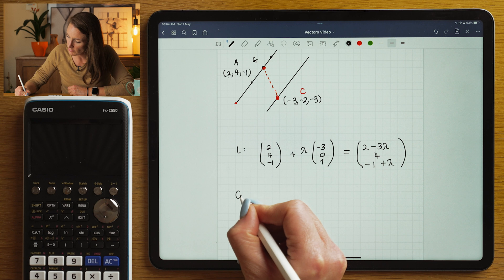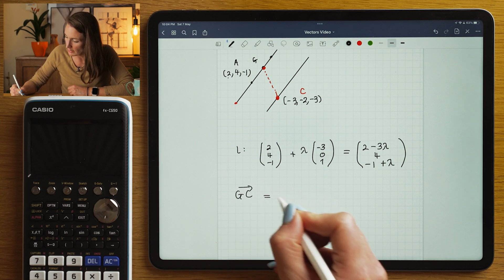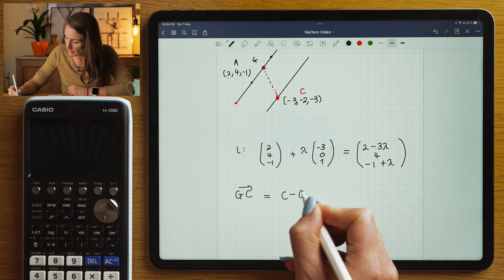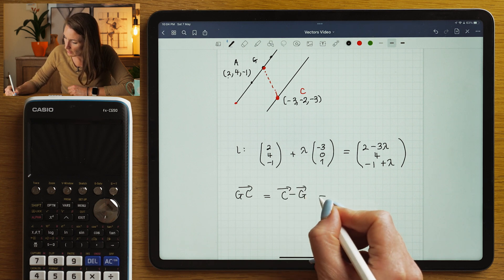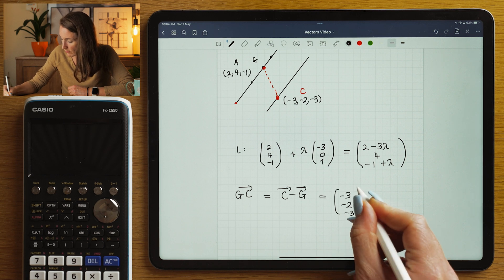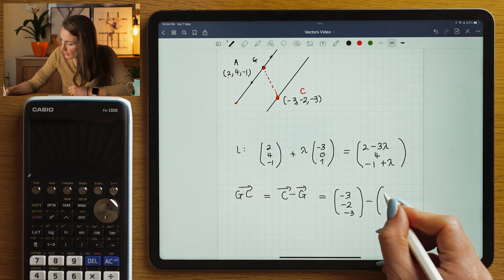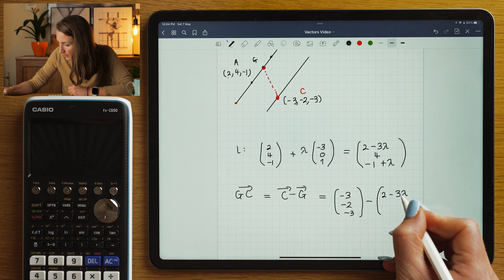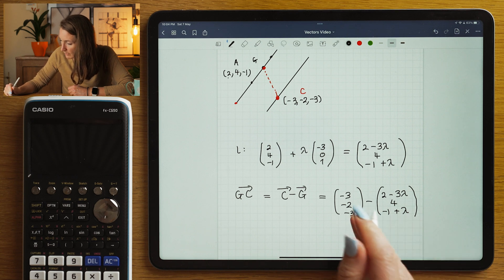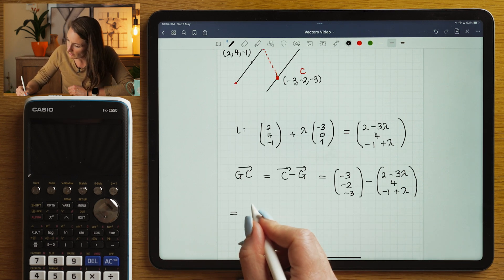So the point that will take me to the general point to the specific point C is going to be C minus G. C is (-3,-2,-3), subtracted with G, which is (2-3λ, 4, -1+λ).